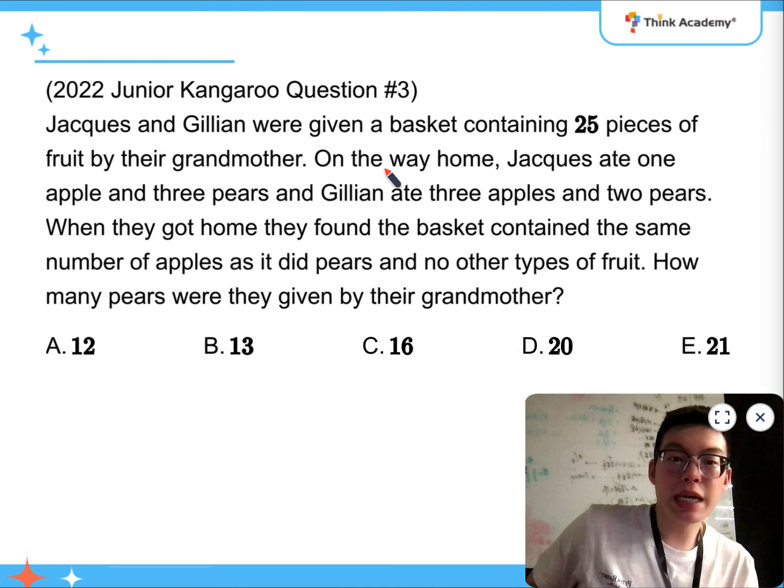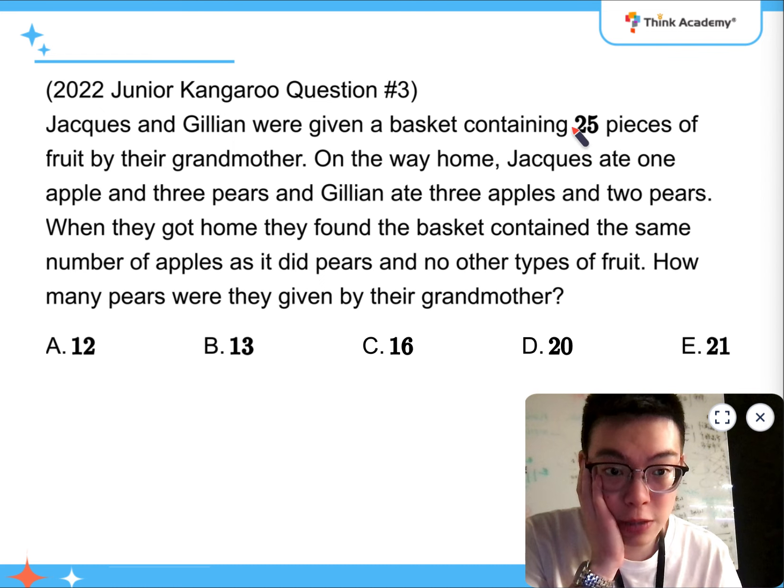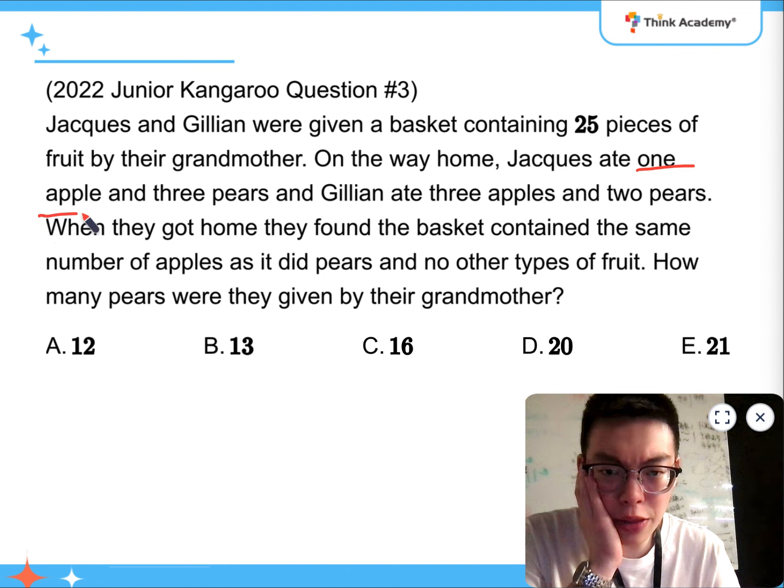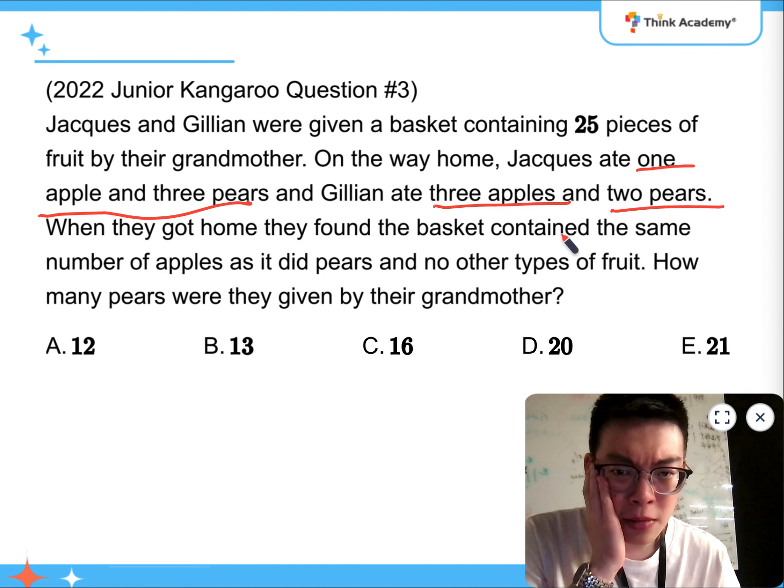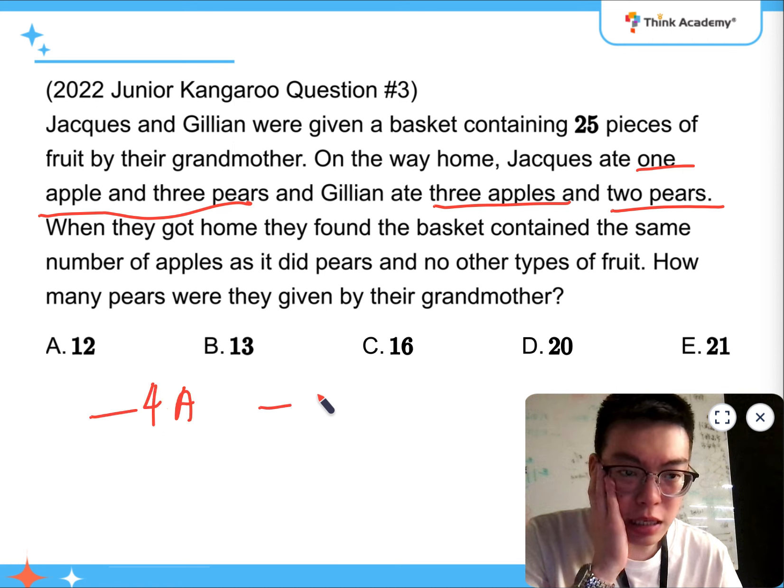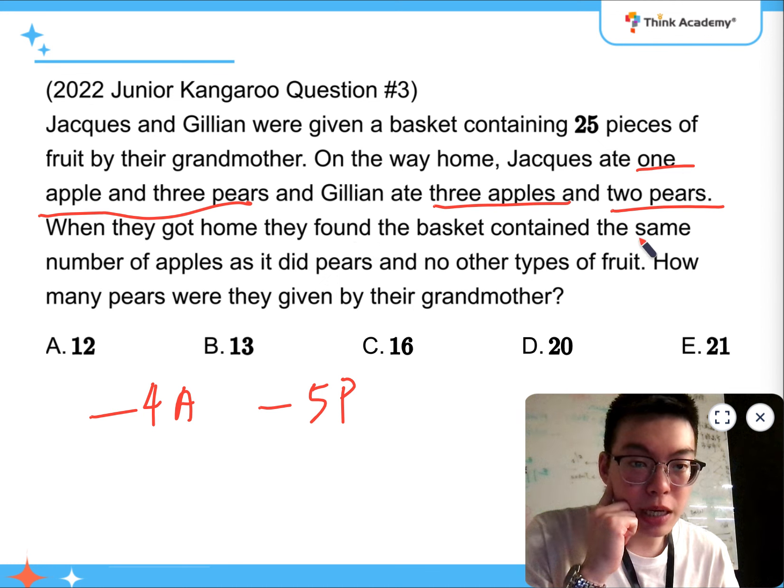As for question 3, it says that there's a basket containing 25 pieces of fruit. On the way home, someone ate 1 apple and 3 pears. Someone ate 3 apples and 2 pears. So, all together, that's 4 apples and 5 pears. When they got home, they found that the basket contains the same number of apples as it did pears, and no other types of fruits.